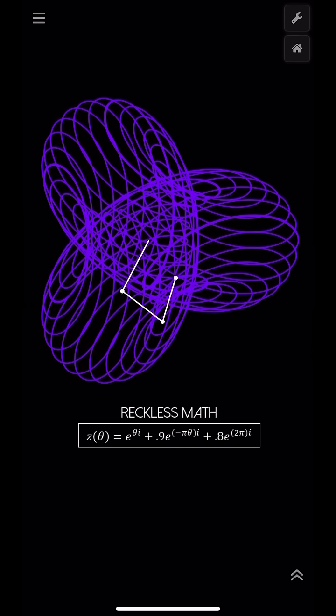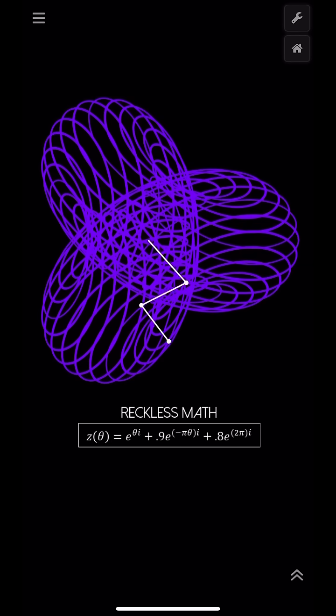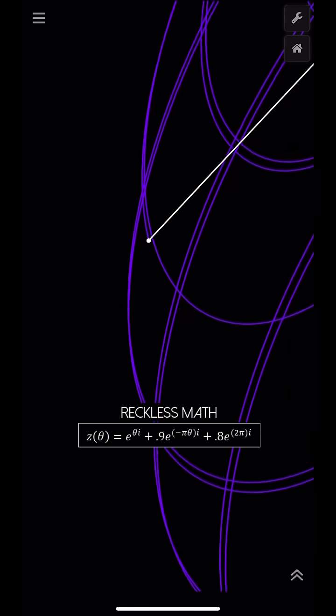From this point of view, it looks like it's retracing itself, but you can see that the lines appear to be getting thicker. However, this is just an illusion. There are still spaces between the lines.